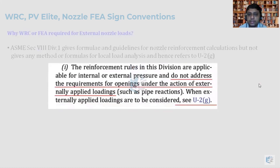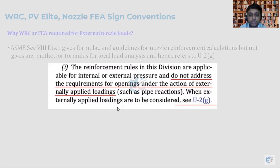To understand how to cater to this requirement, here is a cutout taken directly from the code: 'The reinforcement rules in this division are applicable for internal or external pressure and do not address the requirements of openings under the action of externally applied loading such as pipe reactions.' When externally applied loadings are to be considered, the code refers to U2G. ASME Section 8 Division 1 does not have the methodology to calculate stresses caused by external loading or pipe reactions.